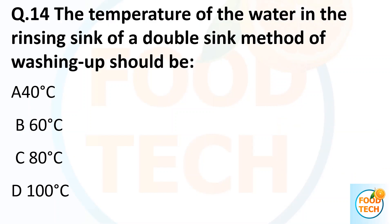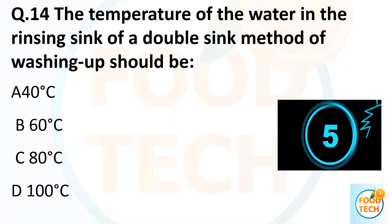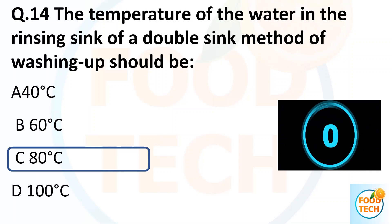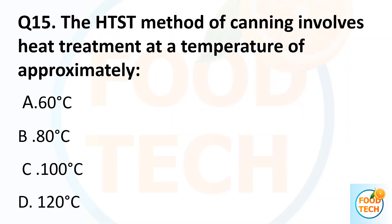Question 40. The temperature of water in the rinsing sink of the double sink method of washing up should be: A. 40 degree Celsius. B. 60 degree Celsius. C. 18 degree Celsius. D. 100 degree Celsius. Answer C. 18 degree Celsius.